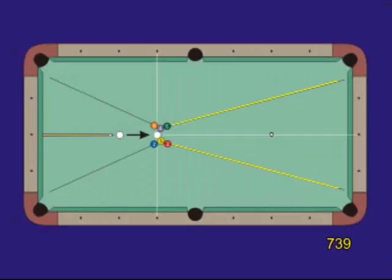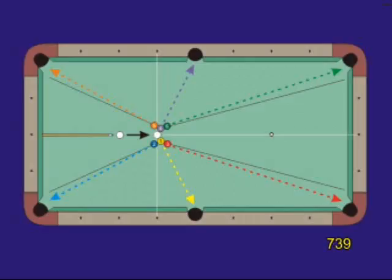You want to aim to split the one and four balls with a medium speed center ball hit. The one and four throw the two, three, five and six into the corners, and they go off the tangent lines of the two and five to the sides. If the balls are set up well and frozen, this shot is tough to miss even if you don't split the one and four well.